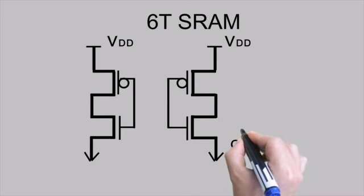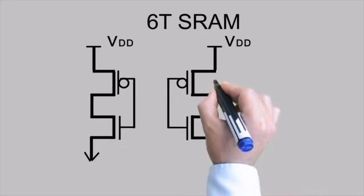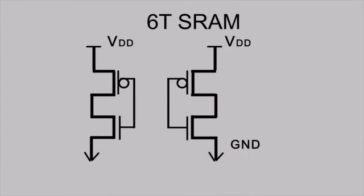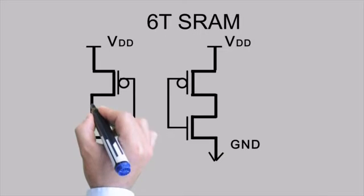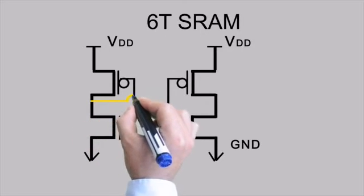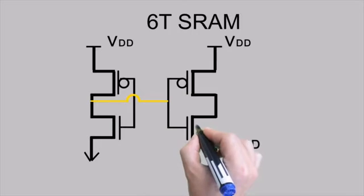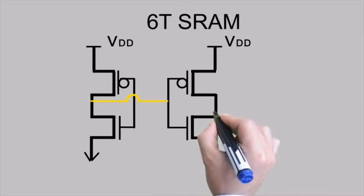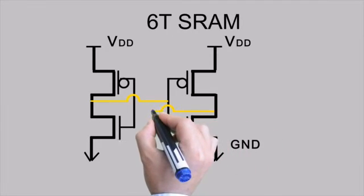Both these inverters need to be cross coupled. When I say cross coupled it only means that output of one inverter needs to be connected to the input of the other one. Now the output of the other one needs to be connected to the input of the first.